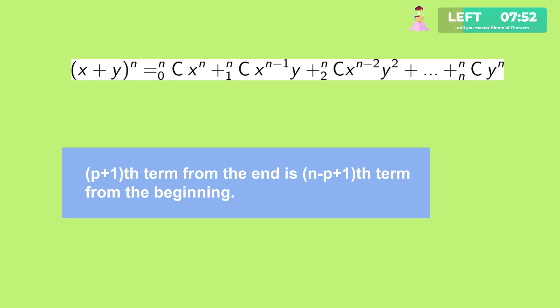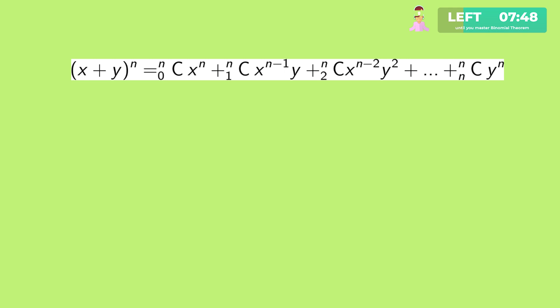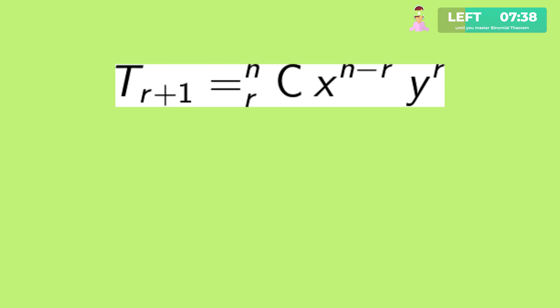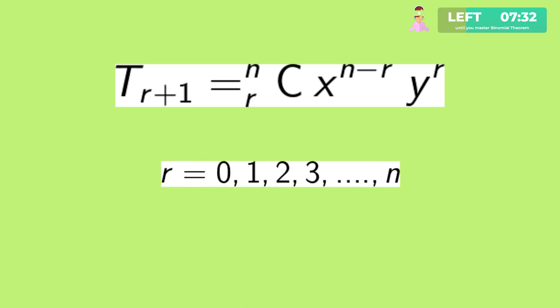The (p plus 1)th term from the end is the (n minus p plus 1)th term from the beginning, and binomial coefficients of terms equidistant from the beginning and the end are equal. The general term is given by T(r+1) equals nCr x to the power (n minus r) y to the power r, where r can be 0, 1, 2, up to n.